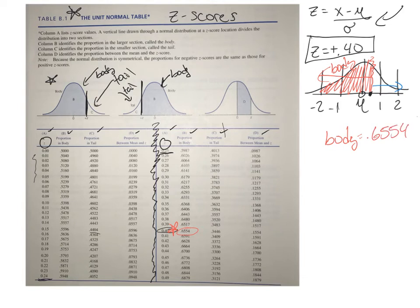Then my proportion in the tail is 0.3446. So that's this part right here. It's a little tinier.